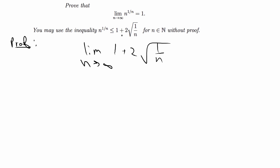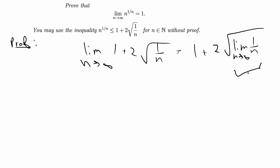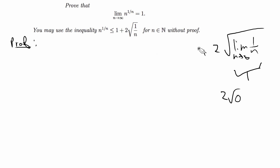On the right-hand side, the limit of 1 plus 2 times the square root of 1 over n equals 1 plus 2 times the square root of the limit of 1 over n as n goes to infinity. The limit of 1 over n equals 0 — and at that point in a real analysis class you have likely proved that. So the square root of 0 is 0, times 2 is 0, meaning the limit on the right-hand side equals 1. We need the left-hand side limit to also equal 1.